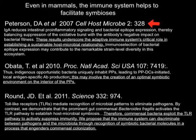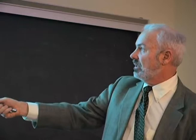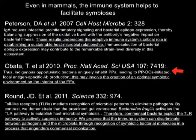IgA reduces intestinal pro-inflammatory signaling and bacterial epitope expression, thereby balancing suppression of the oxidative burst with the antibody's negative impact on bacterial fitness. These results underscore the adaptive immune system's critical role in establishing a sustainable host-microbial relationship. I thought the immune system was there to prevent a host-microbial relationship — here it's sustaining it.